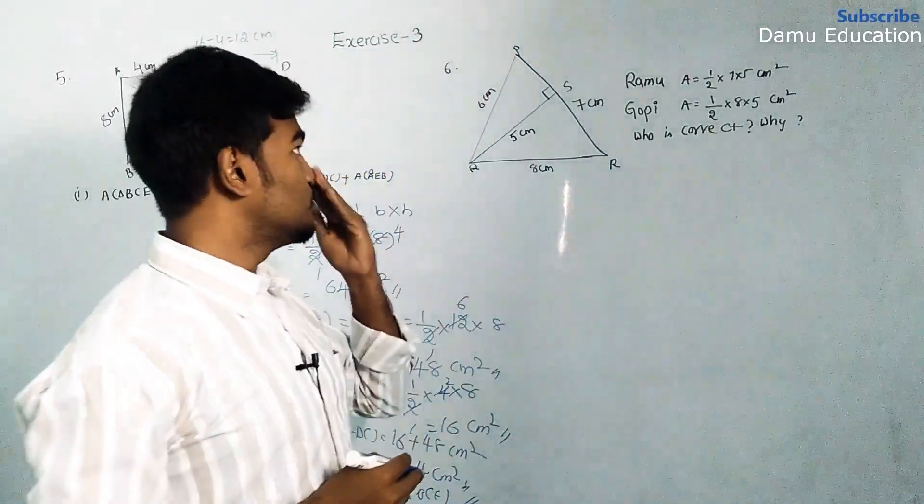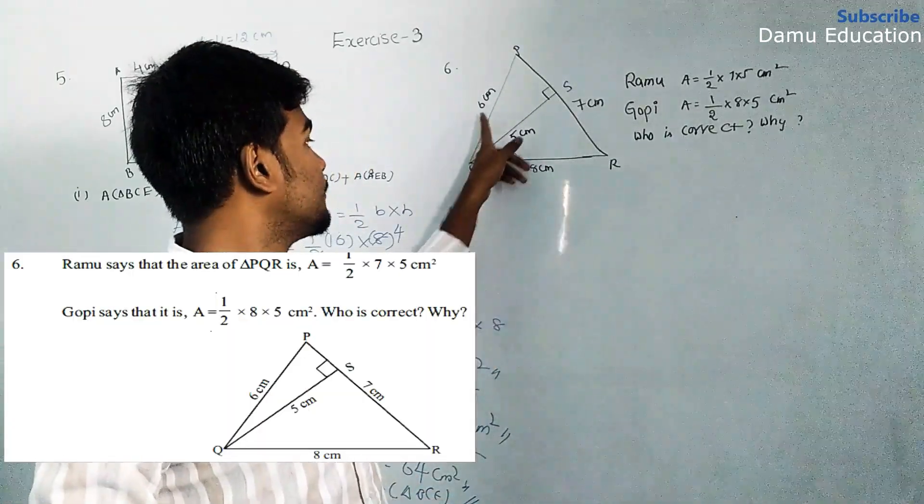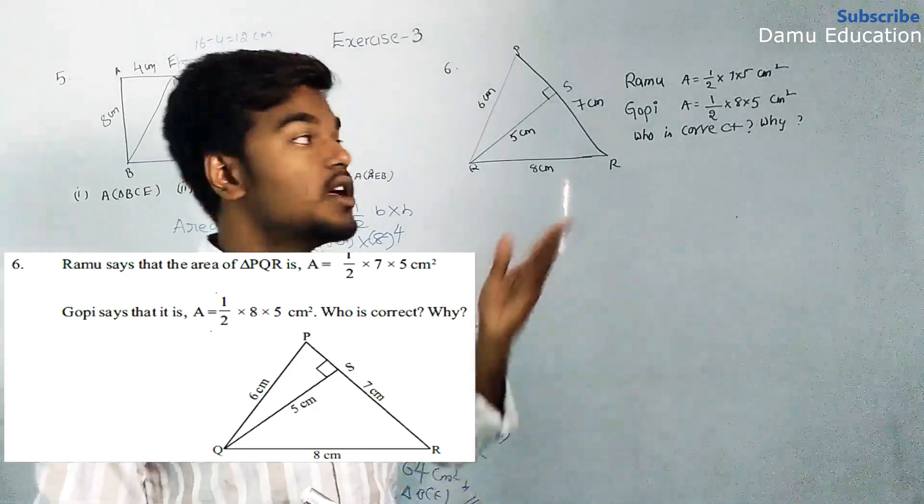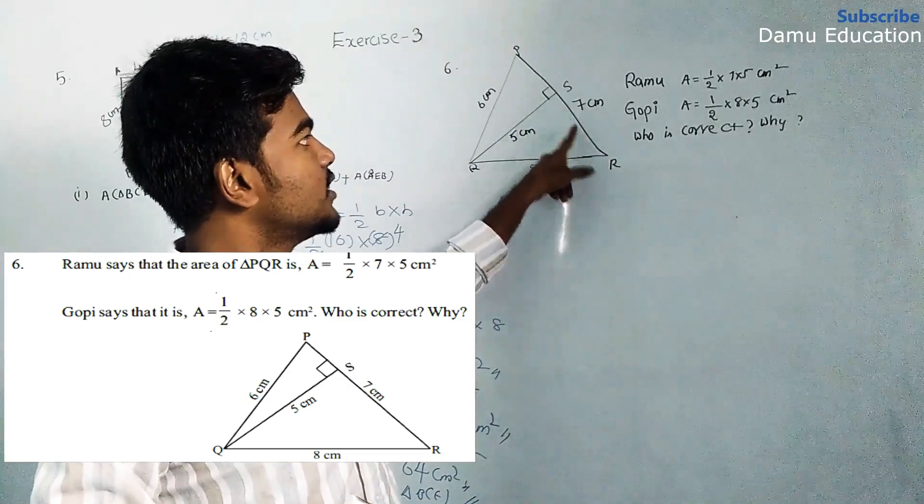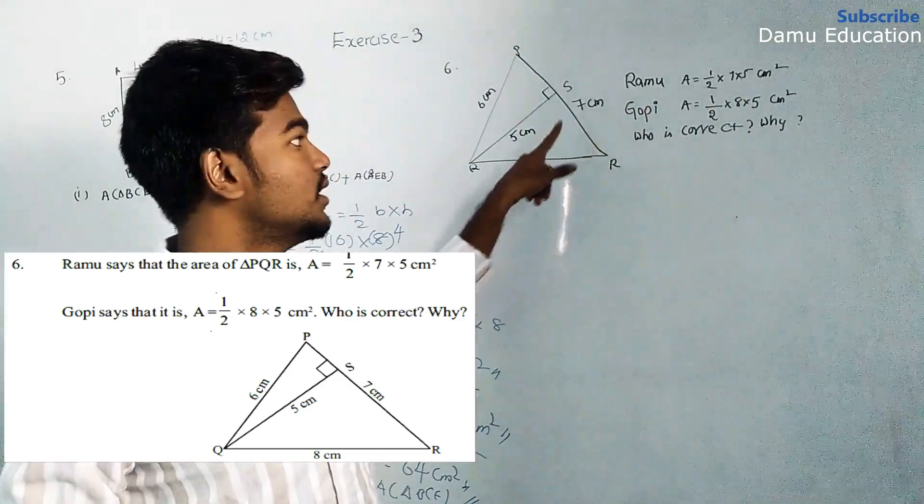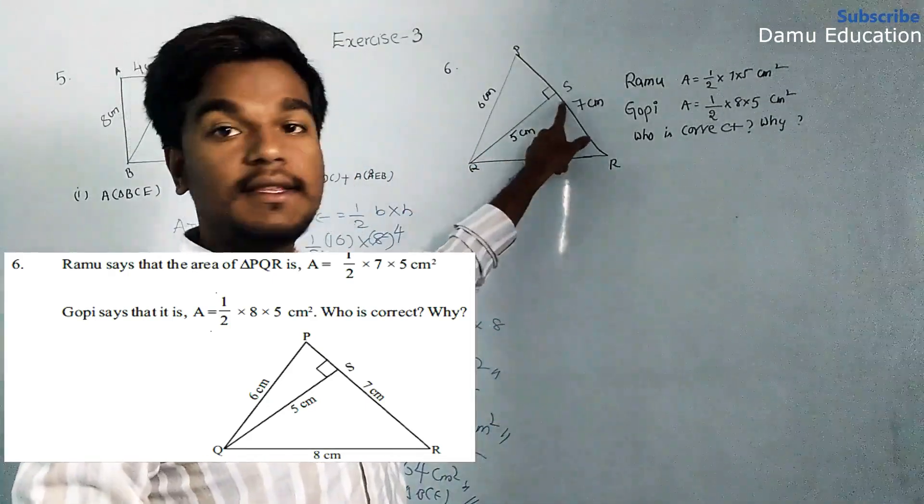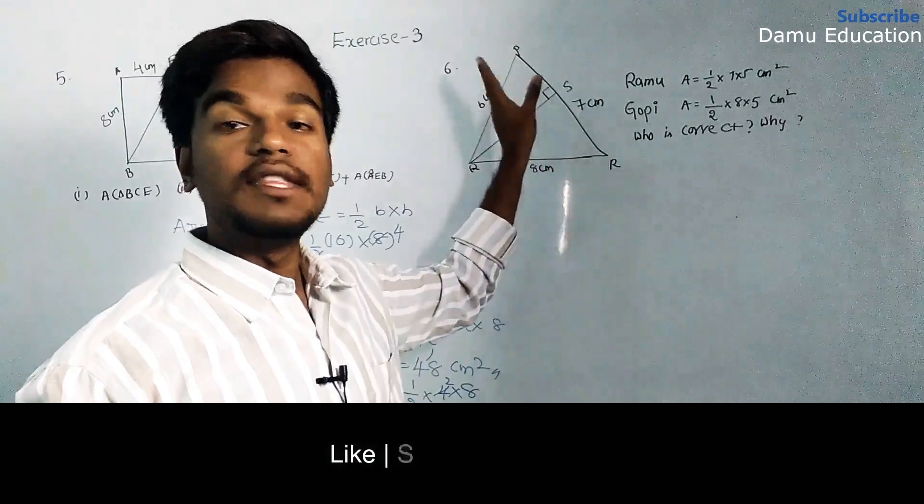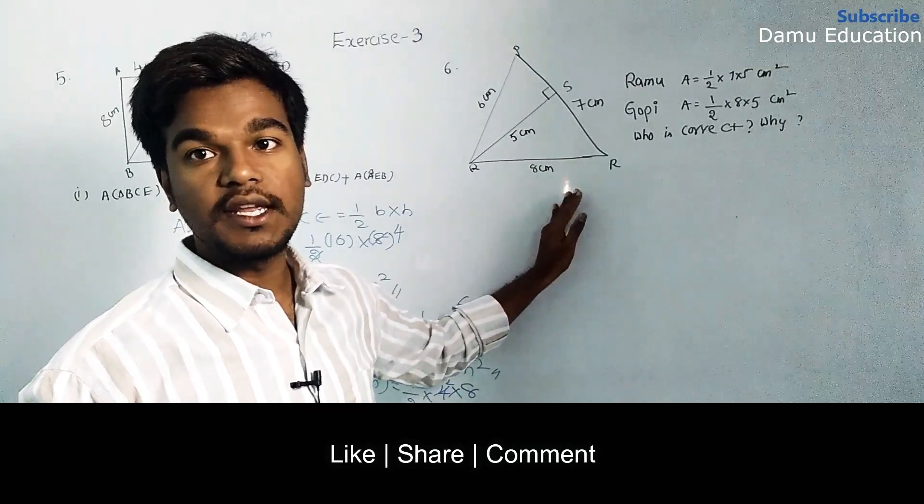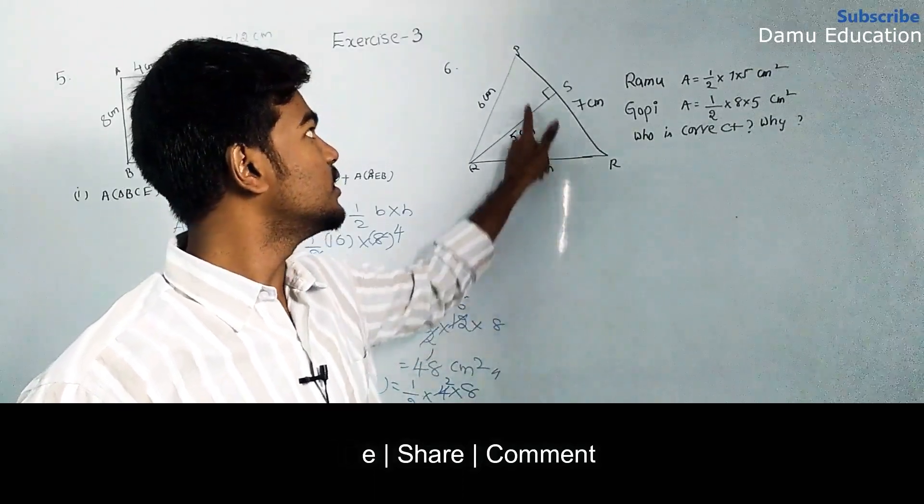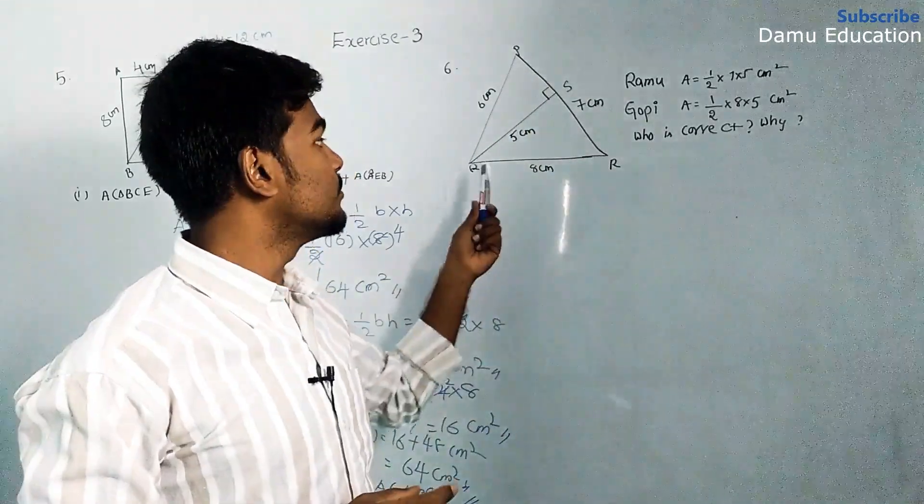The next question: Ramos has a triangle PQR where PR is 7 cm and PQ is 6 cm. The perpendicular distance from P to QR is 5 cm. This perpendicular distance is with respect to PR only, not with respect to QR.